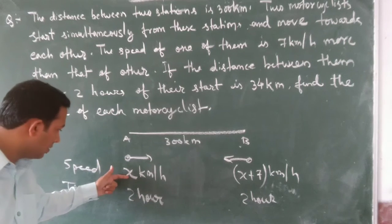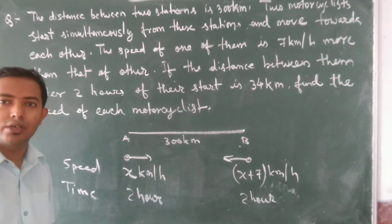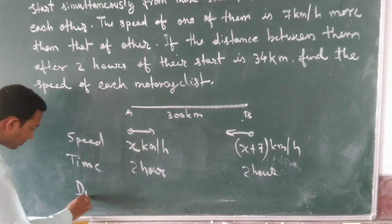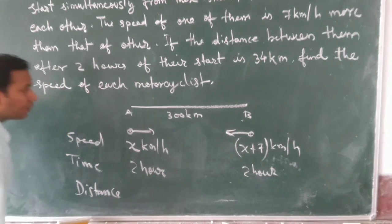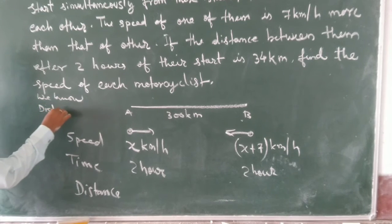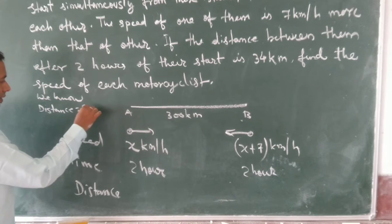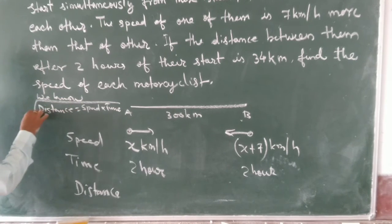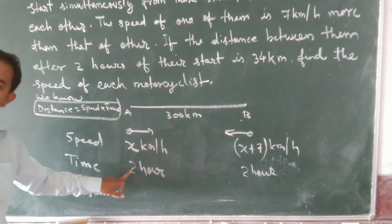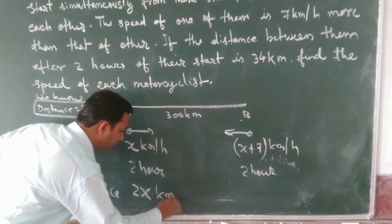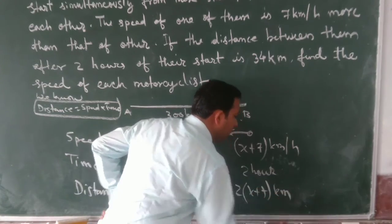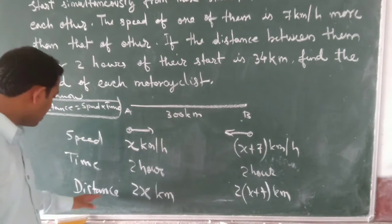We know the formula: distance equals speed into time. Applying this, the distance covered by motorcyclist A is 2x, and the distance covered by motorcyclist B is 2 into (x plus 7).